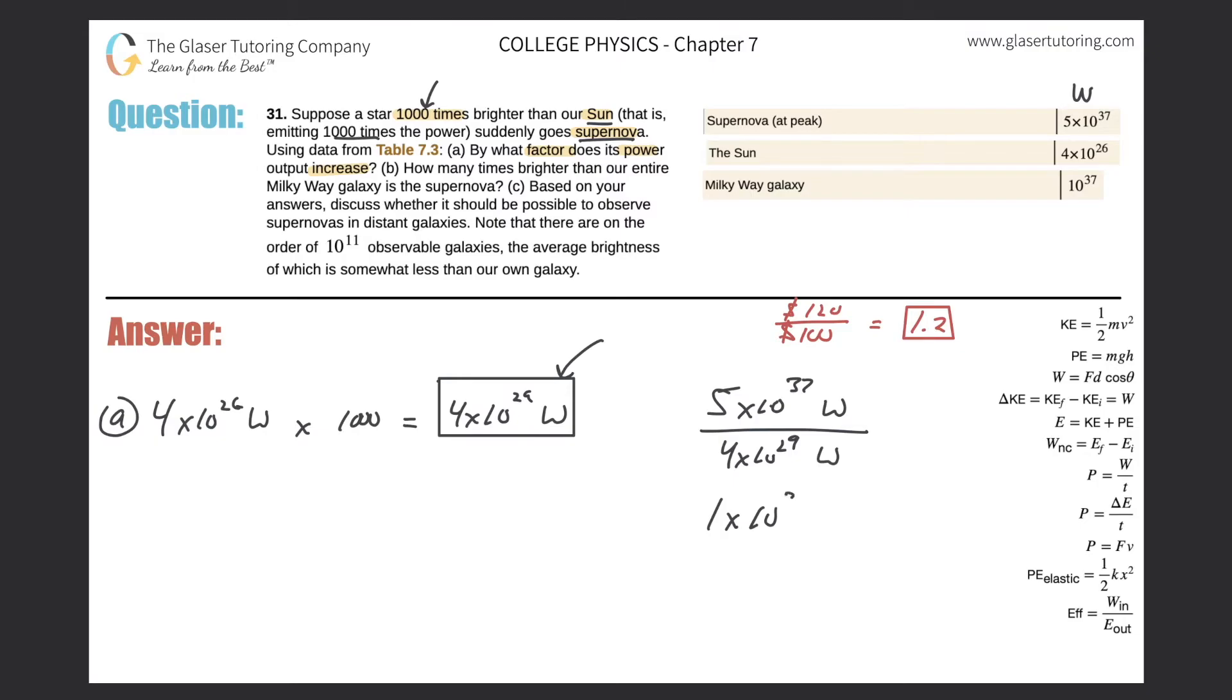So it's 1 times 10 to the 8 and no units because when you take watt and divide it by watt, they both cancel. But this would be the factor that it would increase by. What is that? About 125 million times.